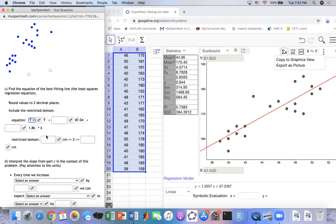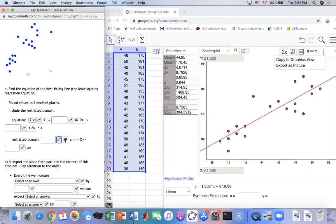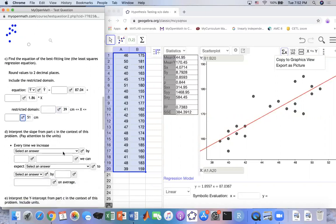Over here, they ask for your restricted domain because this model is based on the data. If you choose something outside, maybe it's not accurate anymore. The number here is 39. The smallest value you can have is 39, and the largest value is 51. So whenever you choose data, it has to be in that domain, otherwise it doesn't work.